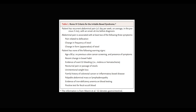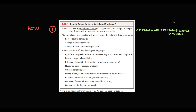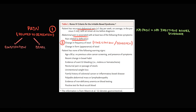Nowadays, to make a diagnosis of IBS we use Rome IV criteria. Recurrent abdominal pain is essential — if abdominal pain is absent, it's not IBS. Abdominal pain must be associated with three features: first, it is related to defecation, which can either relieve or worsen the pain. Second, there should be changing stool frequency — constipation, diarrhea, or both. Third, there is changing form of stool: hard in constipation, watery in diarrhea.